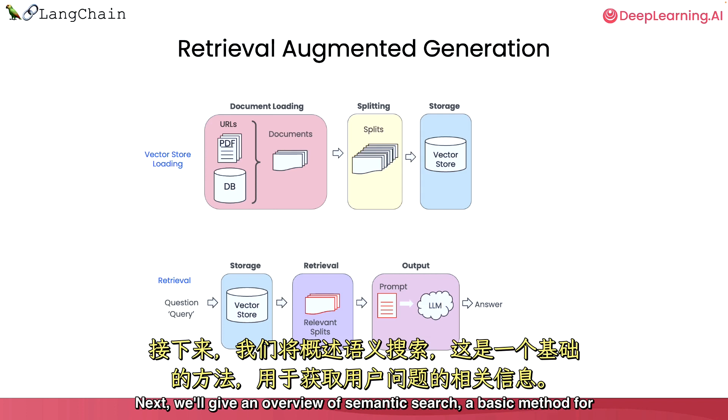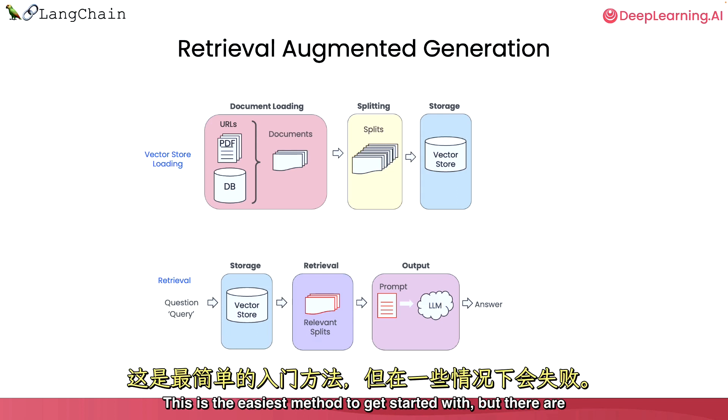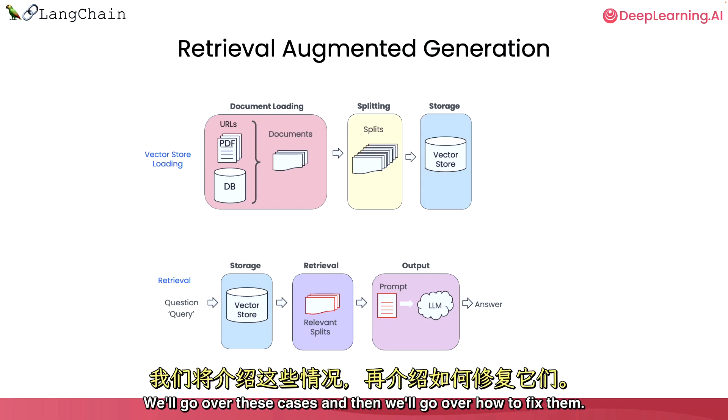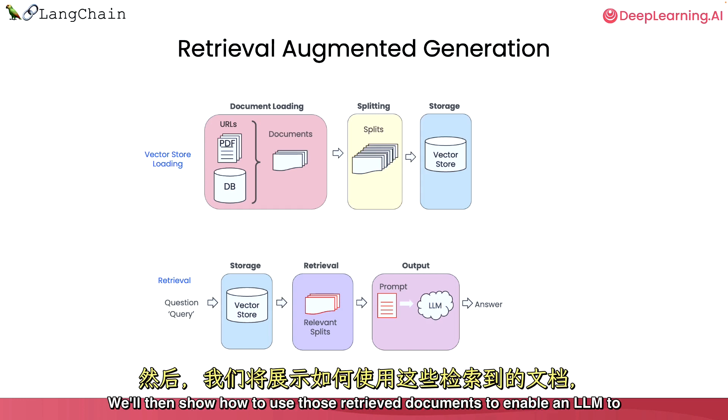Next, we will give an overview of semantic search, a basic method for fetching relevant information given a user question. This is the easiest method to get started with, but there are several cases where it fails. We will go over these cases and then we will go over how to fix them.